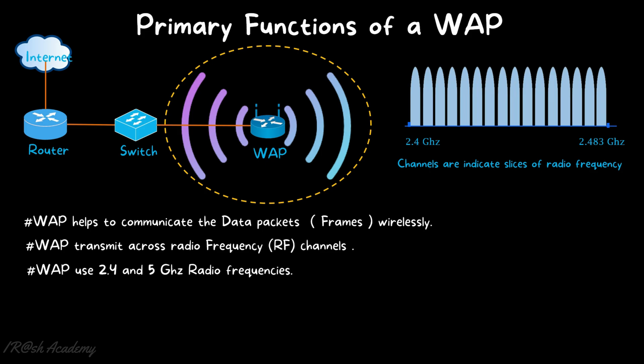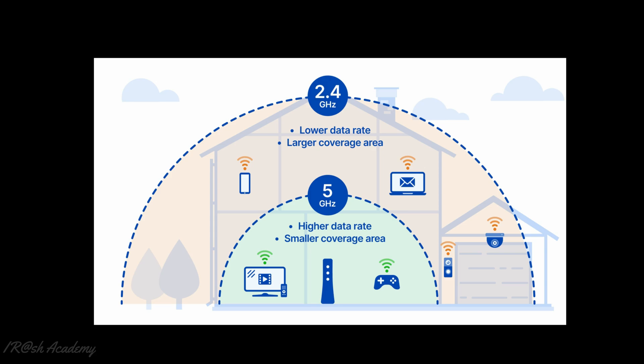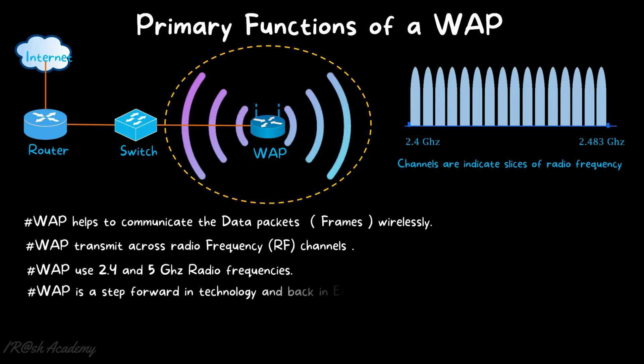What is the difference between 2.4 and 5 GHz? A 2.4 GHz connection travels further at lower speed, but 5 GHz frequencies provide faster speed at short range. As shown on screen, 2.4 GHz has a lower data rate but a larger coverage area, while 5 GHz has a higher data rate but a smaller coverage area. Depending on your usage and Wi-Fi devices, you can choose between 2.4 GHz or 5 GHz.